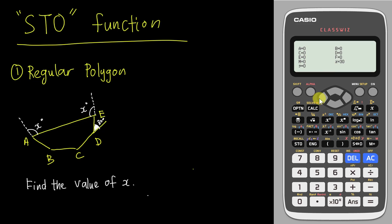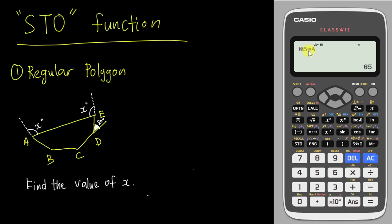I will teach you how to store first, and then how to use the store function in your exam. So let's say I want to store 85 into A. I just tap 85, then tap store — you don't need to tap alpha A, because when you tap store the calculator understands you want to store into one of these letters. You just tap A, and you'll see 85 is now stored into the letter A. If I do shift recall, my A is already 85.